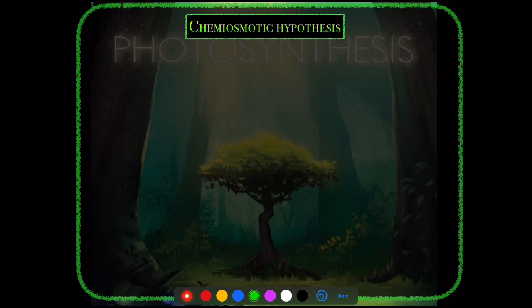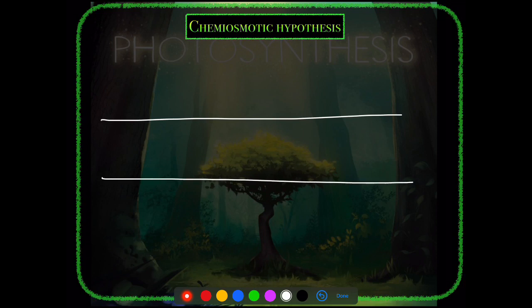In chemiosmotic hypothesis, there is the thylakoid membrane with the lumen on the inside and stroma on the outside. The photosystem and electron acceptors are arranged in this membrane. PS2 is present here; light energy is taken up by PS2 in non-cyclic photophosphorylation and the electron is given out. Simultaneously, photolysis of water occurs on the lumen side.